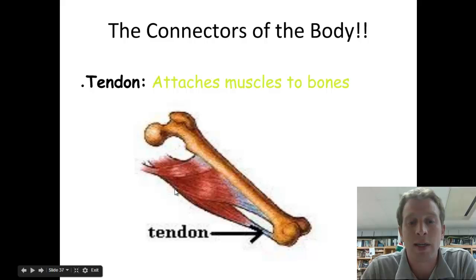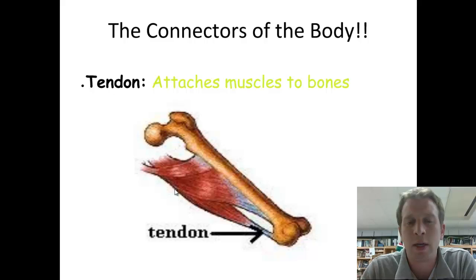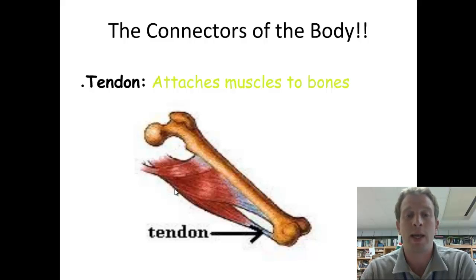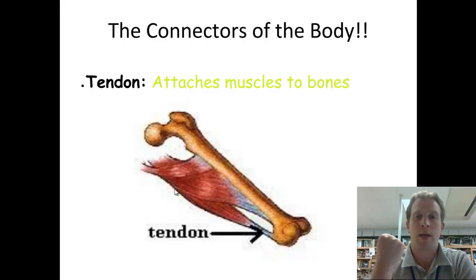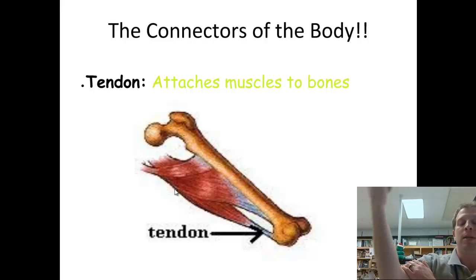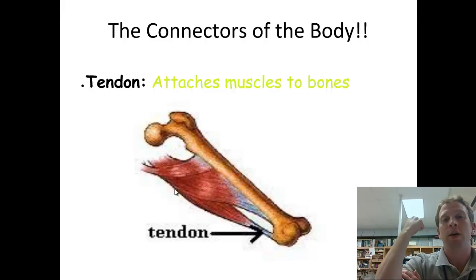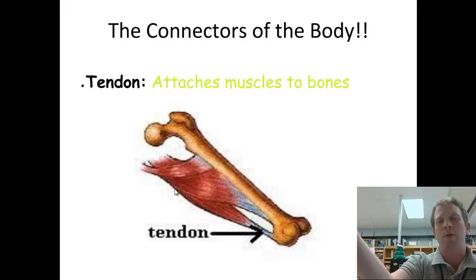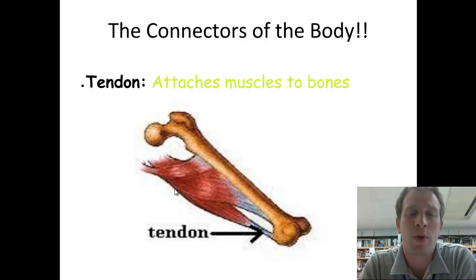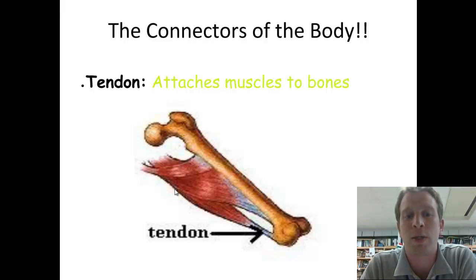The tendon simply attaches muscles to bones. Muscles are what help us move the bones — muscles contract and actually pull the bones in different directions. Right now my bicep is pulling my lower arm up toward my upper arm. When I pull back, I'm pulling with my triceps. Muscles always work in conjunction with each other, and they help us move the bones through our tendons, which attach those muscles to bones.